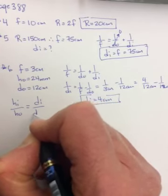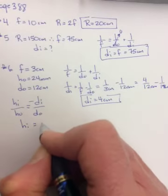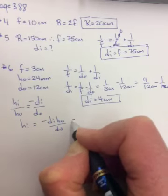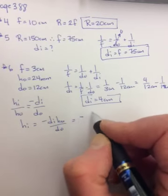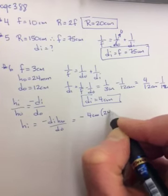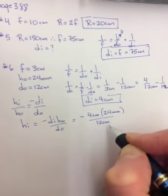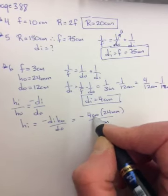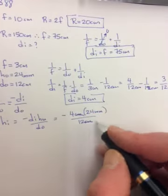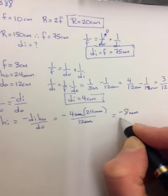HI over DI, HI HO DI DO. Negative. So we're looking for HI. So negative DI HO over DO. Negative DI was 4 centimeters times 24 millimeters divided by 12 centimeters. This centimeter is going to cancel this centimeter. And we're going to be left with millimeters, and it should be negative 8 millimeters.